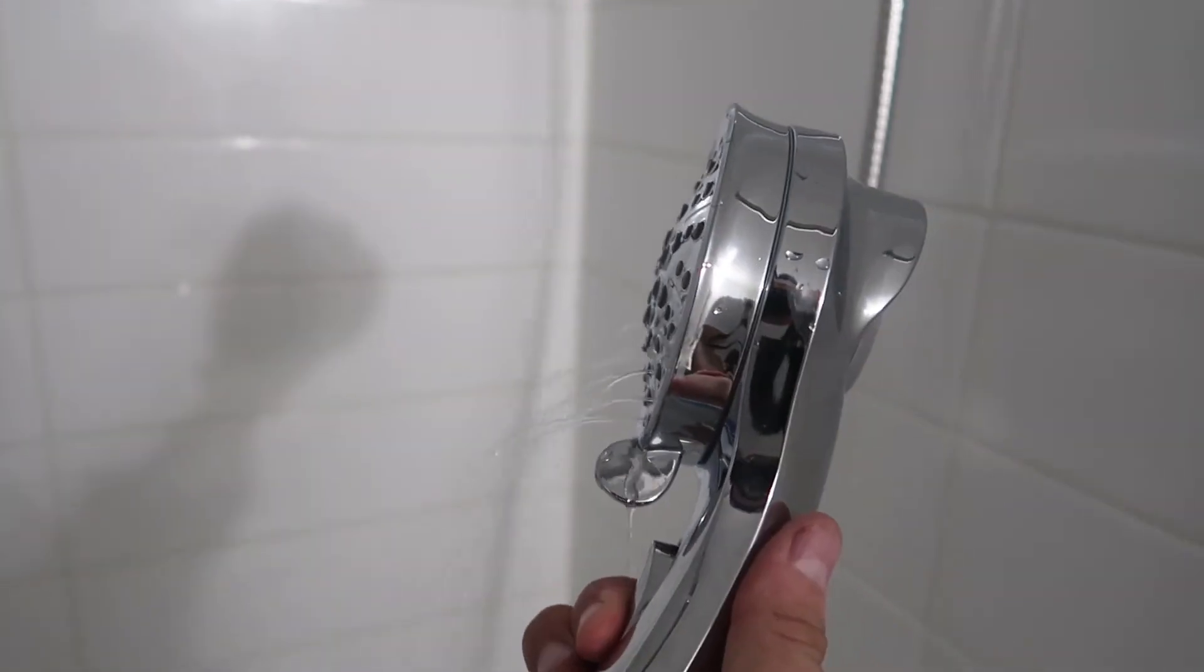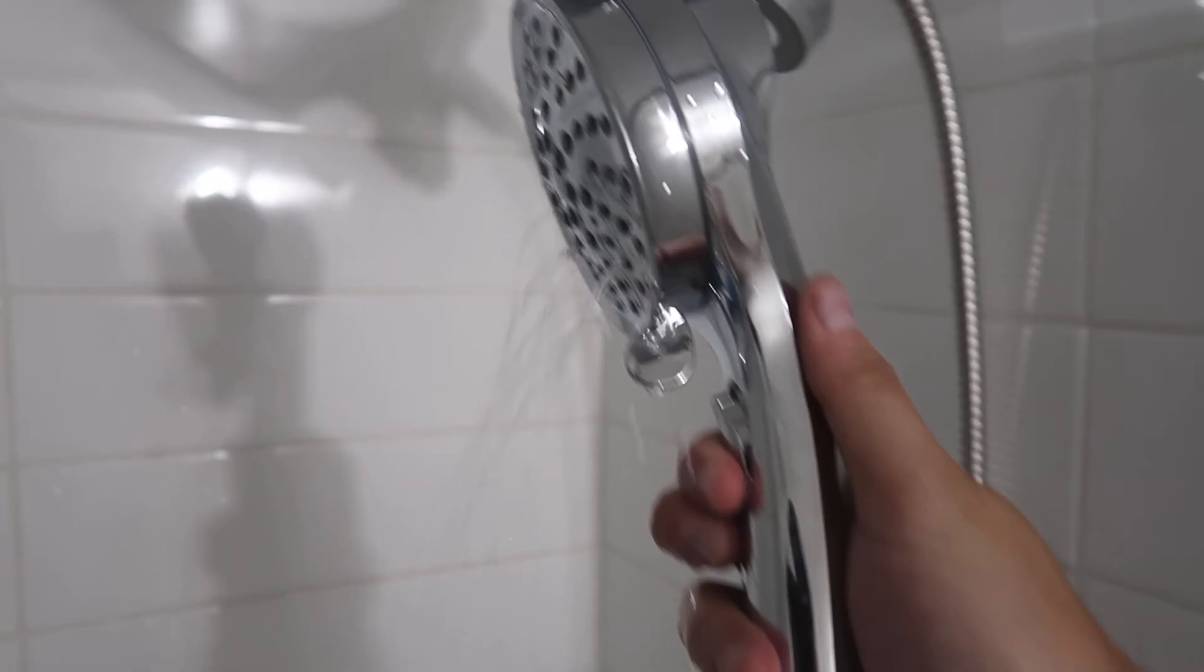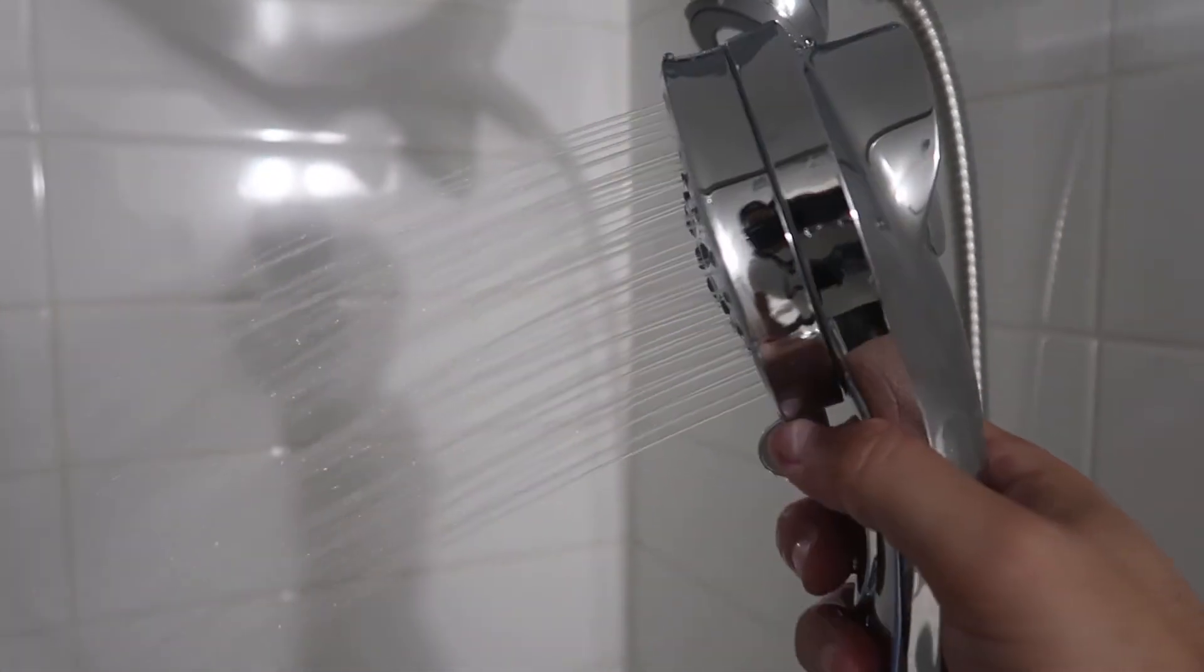Oh, and also this handle has a sprayer. If you press this, it pauses the water - technically it still comes out a bit. Then there's different settings: lower pressure, high pressure, just a stream, a power jet, and a super power jet.